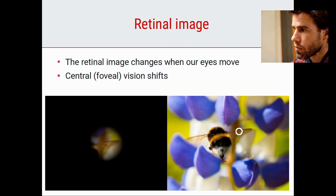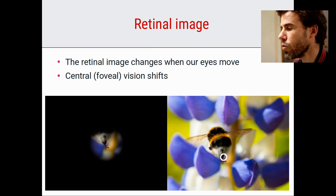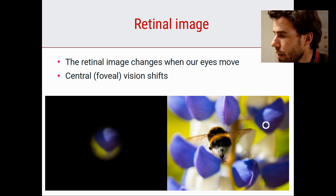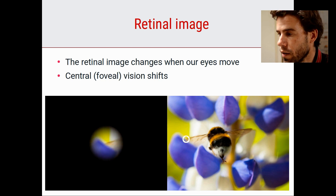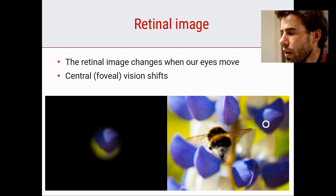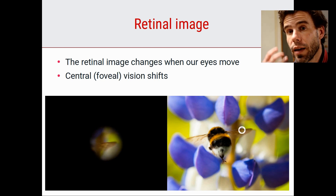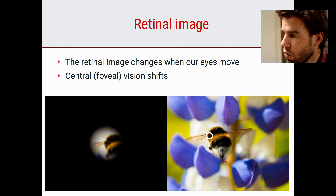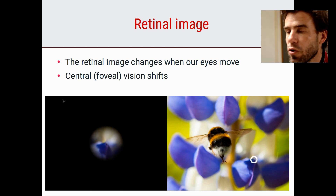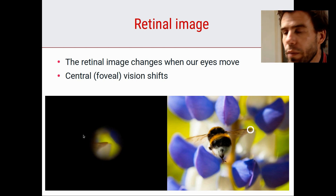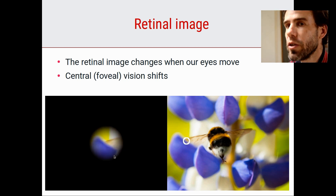The retinal image changes when our eyes move. In this video, you see a simulation: on the right is an image of a bee with a circle indicating where someone is looking, and on the left is a representation of the retinal image. You should note that it shifts completely every time the eyes move, causing disturbances in visual input. Also, you only actually see a small part of the world clearly - foveal vision is rendered as a circular window, with everything else being peripheral vision.